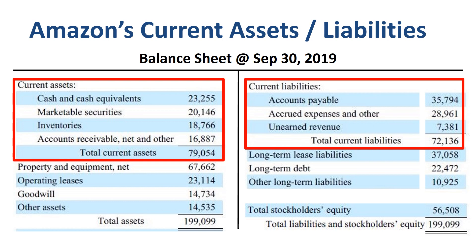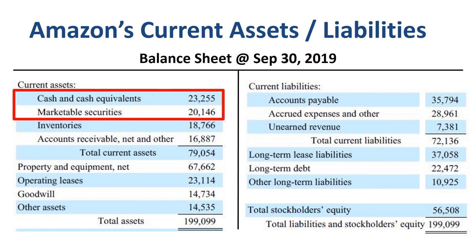Current assets are slightly bigger than current liabilities. For every dollar of current liabilities, there is $1.10 of current assets — in other words, the current ratio is 1.1. Something that is very unusual for most companies, but actually quite common for tech companies, is the large amount of cash and marketable securities: $43 billion in the case of Amazon, an ample treasure chest which gives Amazon a lot of flexibility to invest organically as well as pursue acquisitions.